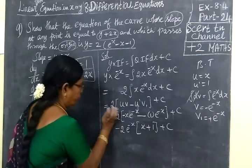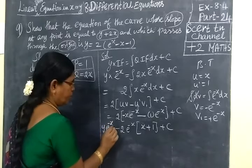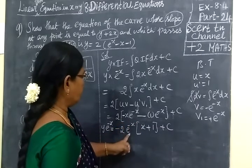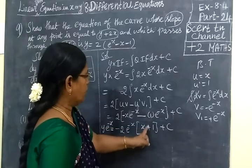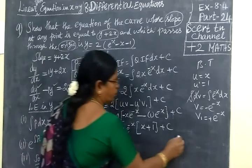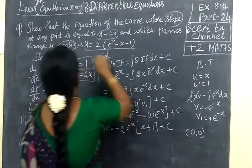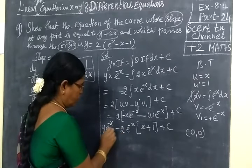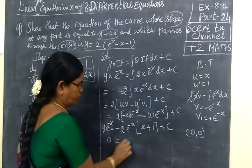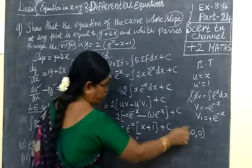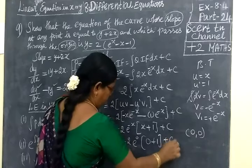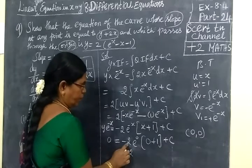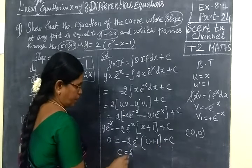So we have y into e power -x equal to minus 2 e power -x into (x plus 1) plus c. Since the curve passes through (0, 0), we substitute x equal to 0 and y equal to 0. So 0 equal to minus 2 times e power 0 times (0 plus 1) plus c. Since anything power 0 is 1, we get 0 equal to minus 2 plus c, therefore c equal to 2.